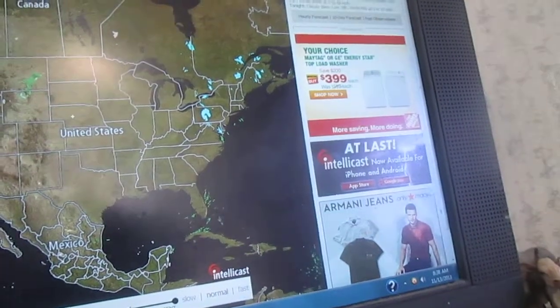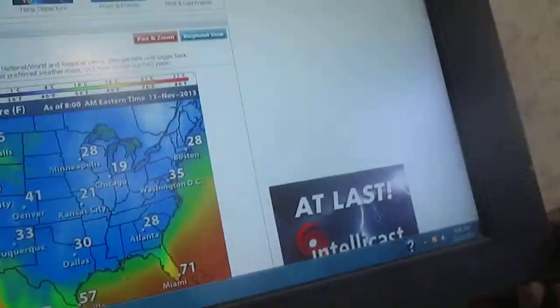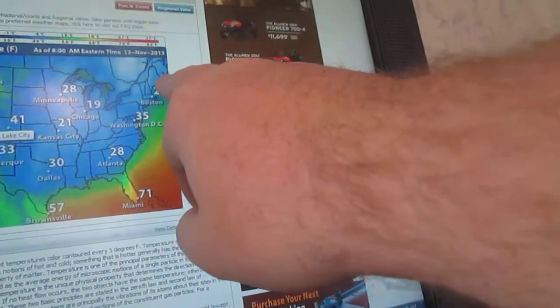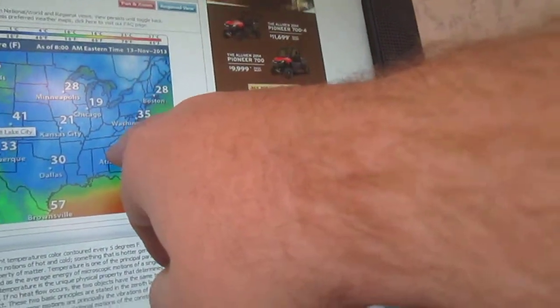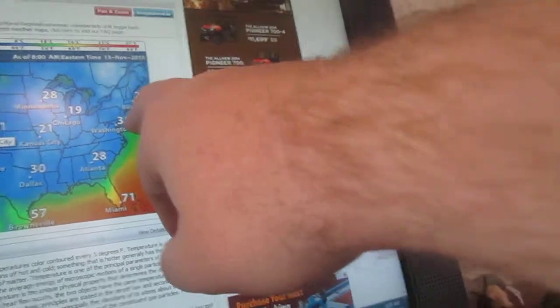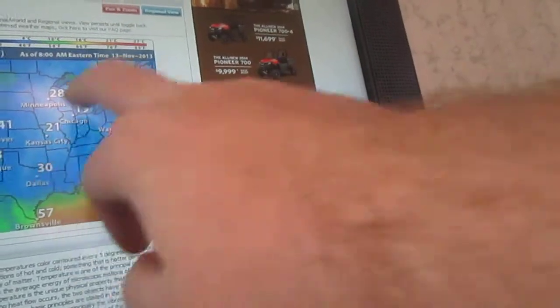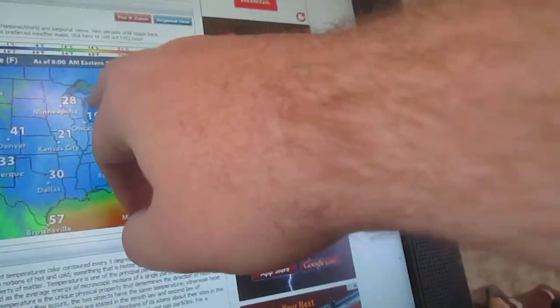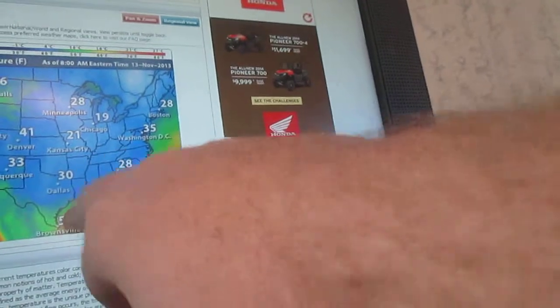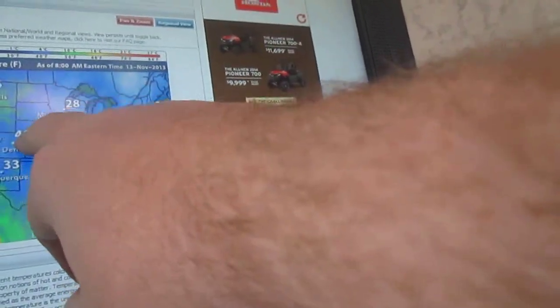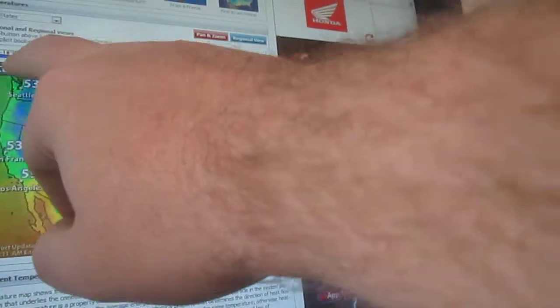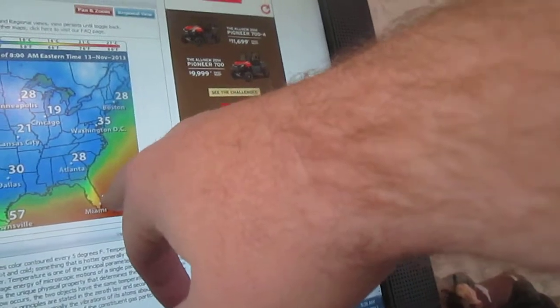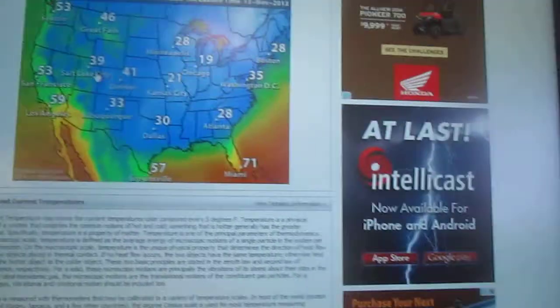We're going to take a look at the temperatures Tuesday November 12th at 10 AM. 28 in Boston, that's same for Atlanta, 35 in the nation's capital, 30 in Dallas, 21 in Kansas City, 19 in Chicago, 28 in the Twin Cities of Minneapolis, 57 in Jacksonville, 33 out in Albuquerque, 41 in Denver, 39 in Salt Lake, 46 in Great Falls, 53 in Seattle, 59 in Los Angeles. If you want to go to the warm, go to Miami at 81 degrees.